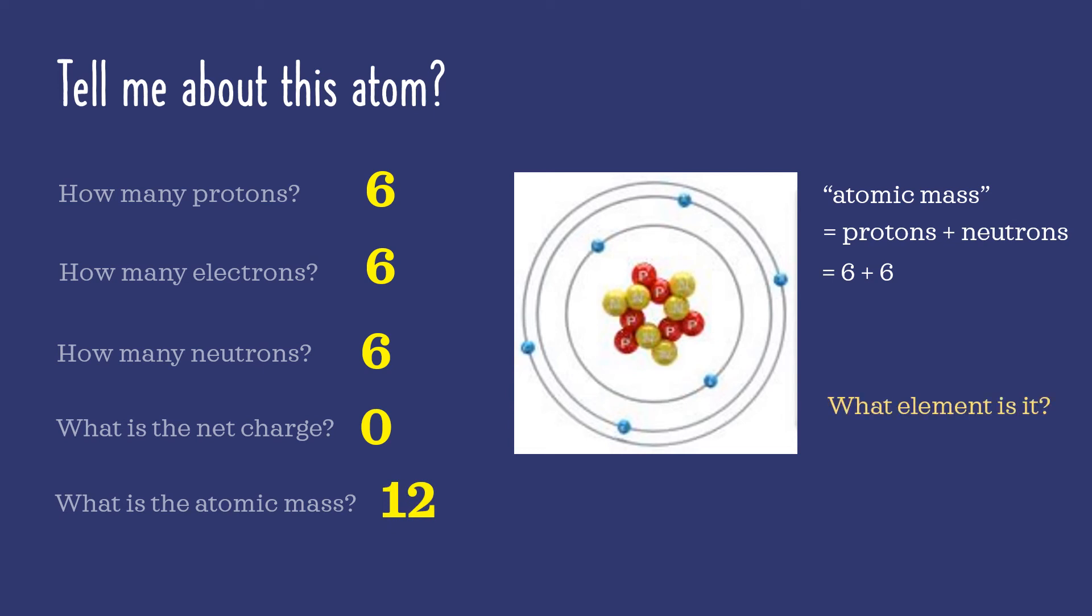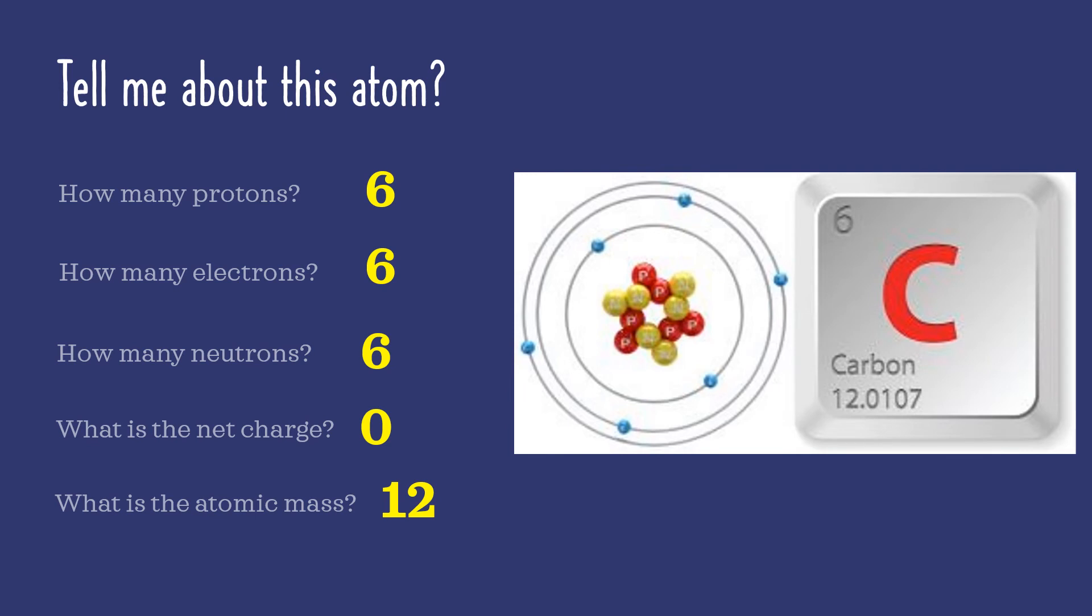What element is this? You should recognize that with six protons, this atom must be carbon. Here on the periodic table square for carbon, the atomic number is at the top. It is always exactly six. Six protons defines carbon.